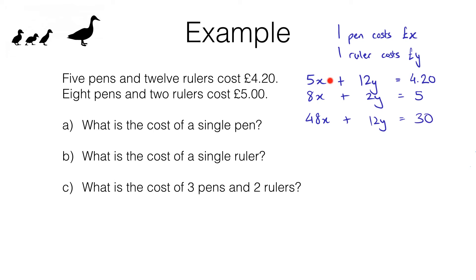I'm just going to rewrite the first equation underneath this one, so that gives me 5x plus 12y equals 4.2, and now I can subtract the second equation off the first and that will give me 43x equals 25.8. Dividing the left and the right hand side by 43, I get x equals 0.6. So that tells me a pen costs 0.6 of a pound or 60p. So we get the same answer as before.